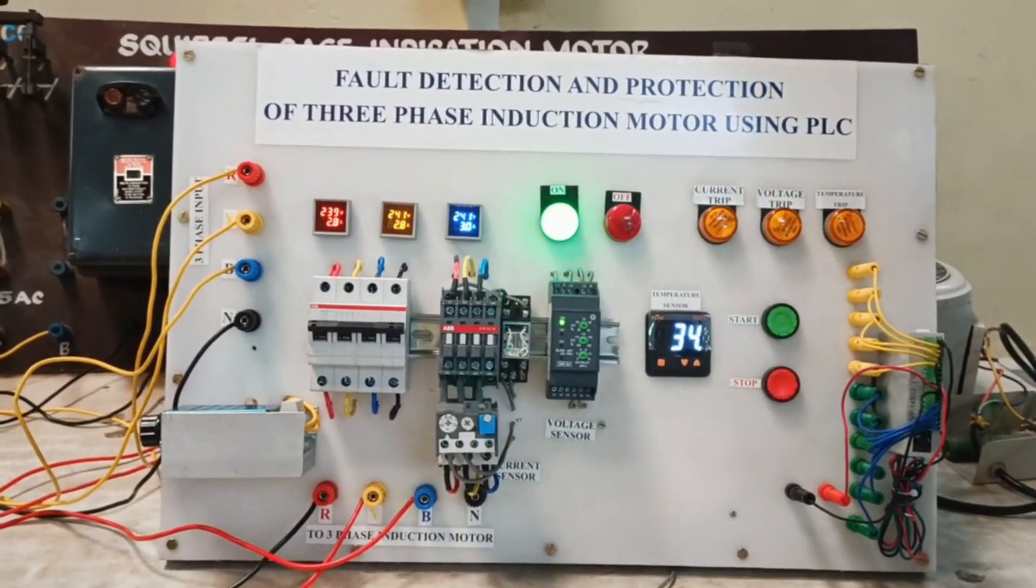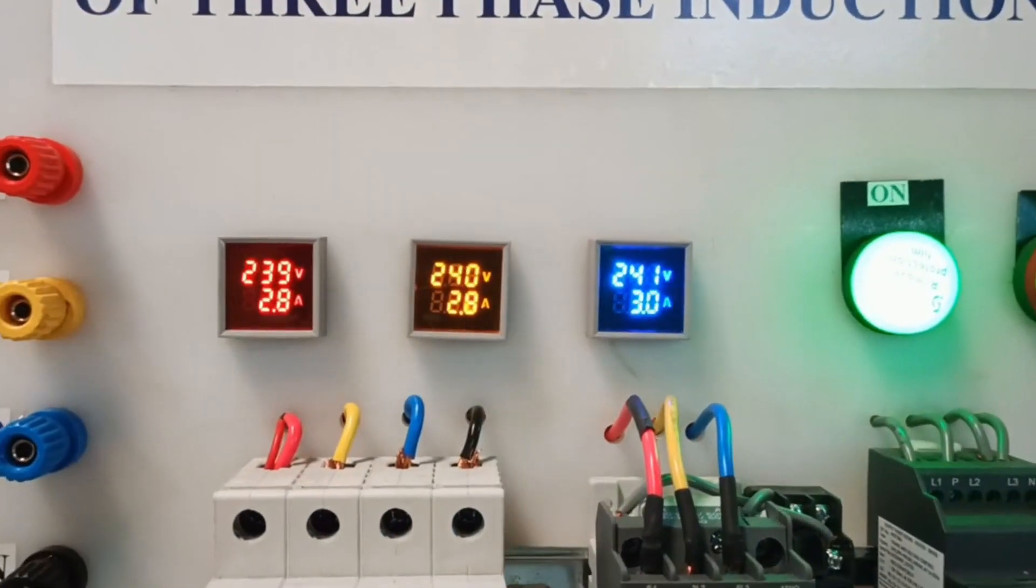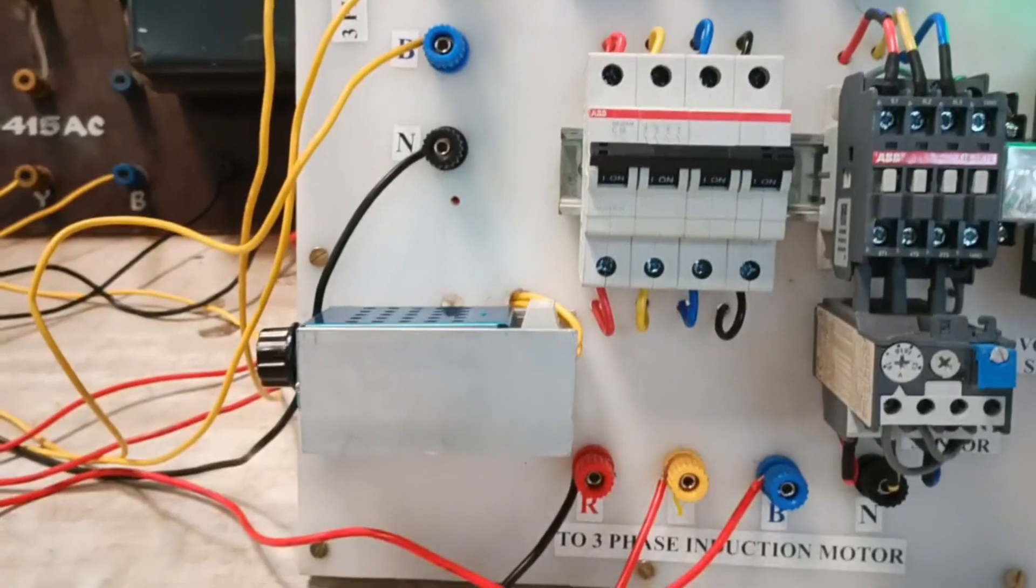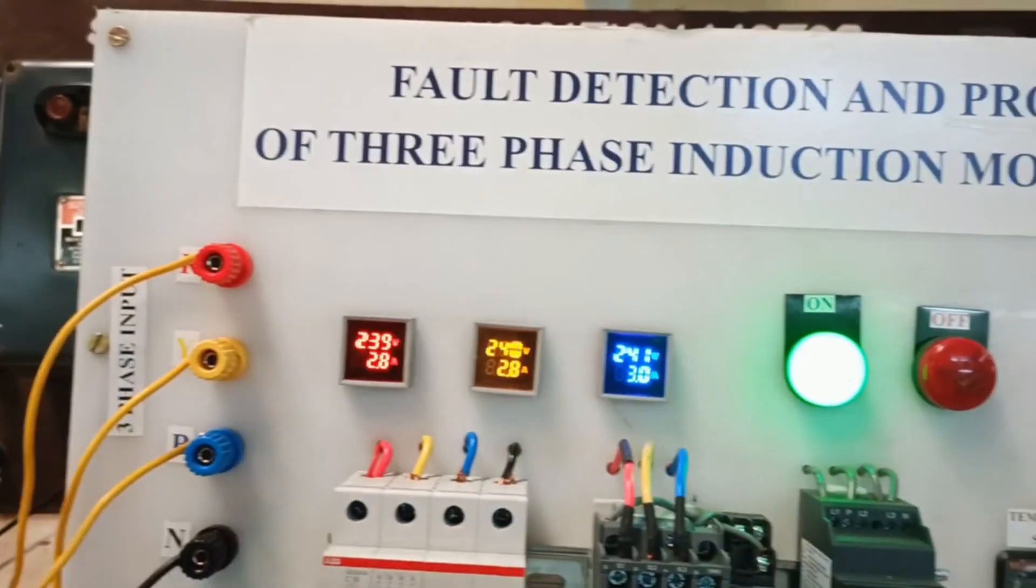And as you can see at normal condition the motor runs normally. But here we are trying to do our under voltage fault. To show that we are using a dimmer and this under voltage relay sends the data to PLC and then the motor is protected due to under voltage fault.